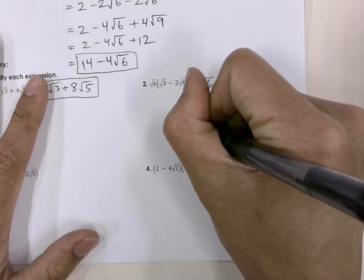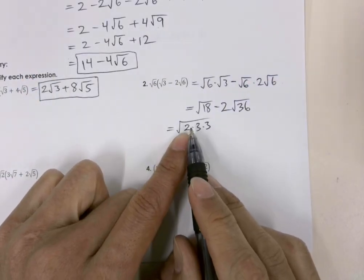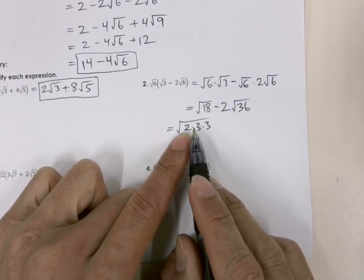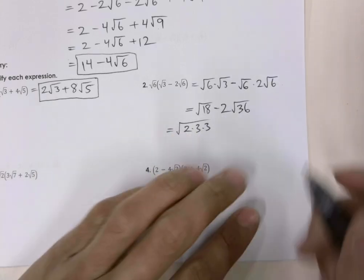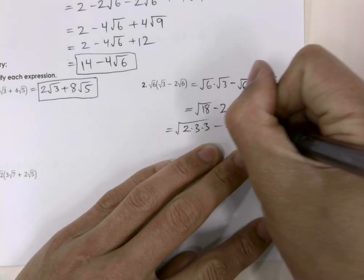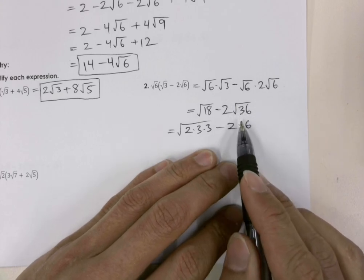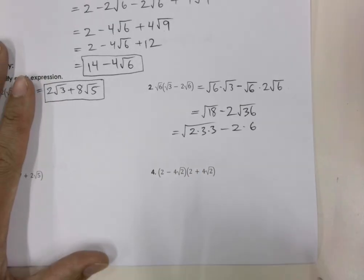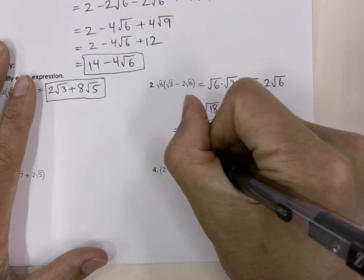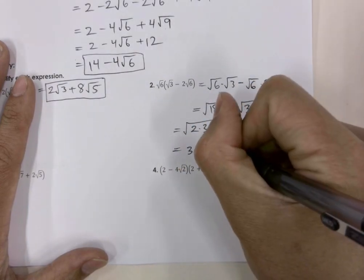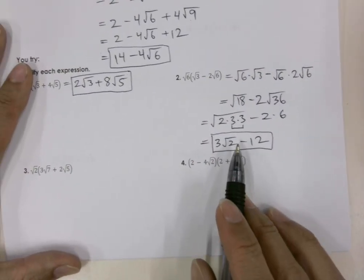Let's do a prime factorization to simplify square root 18. We get square root of 2 times 3 times 3, because 18 divided by 2 is 9, and the factors of 9 are 3 and 3. So 2 times 3 times 3 equals 18. Then we have minus 2 times 6, because 6 times 6 equals 36 and we can pull that out of the square root. We have two 3s, so we can pull out the 3: we get 3 times square root 2 minus 12. And that's number 2 simplified.